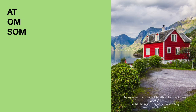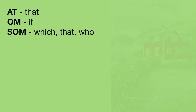I want us now to look at some subordinate sentences with three conjunctions: at, om, and som. Well, first of all, at means 'that.' Om means 'if,' in a sense of 'I wonder if,' 'I don't know if,' and so on. And som means 'which,' 'that,' or 'who,' and it replaces a subject or an object. So let's just look at some examples.